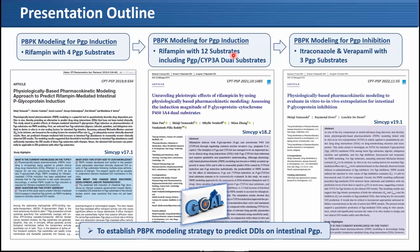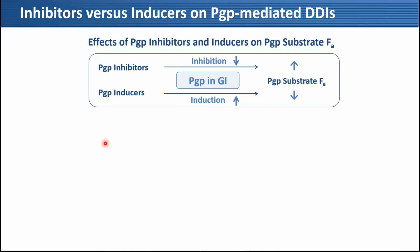This is quite basic, so I'll quickly go through it. When intestinal P-gp is inhibited by an inhibitor, substrate FEa increases. And when P-gp is induced, substrate FEa decreases.